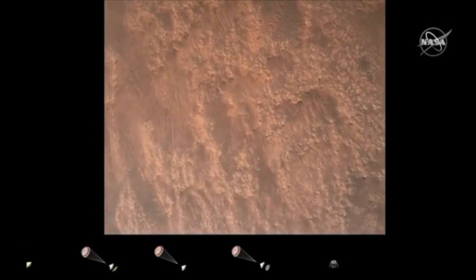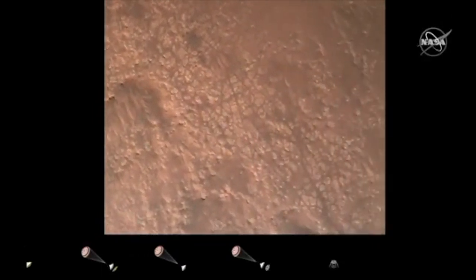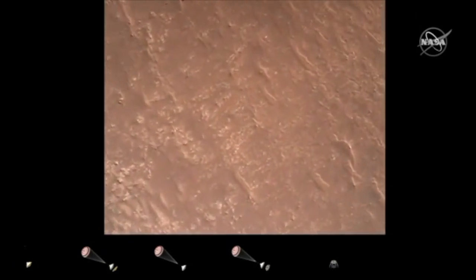We have completed our terrain relative navigation. Current speed is about 30 meters per second at an altitude of about 300 meters off the surface of Mars.